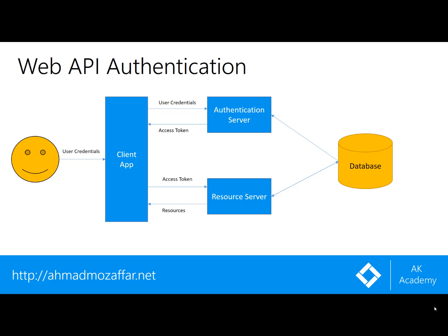But in Web API things are different. Every request and response are totally independent and isolated from each other. Using JSON Web Tokens, the users submit their credentials via the application and the request is sent to the API. The authentication server receives that request, takes the credentials, and tries to validate them.